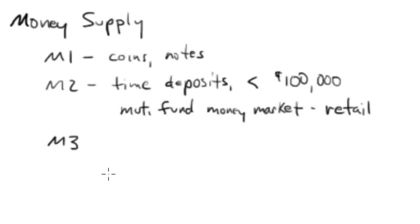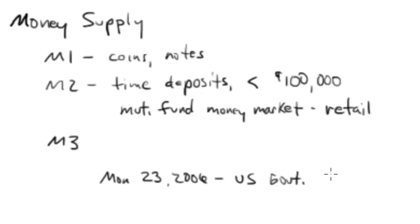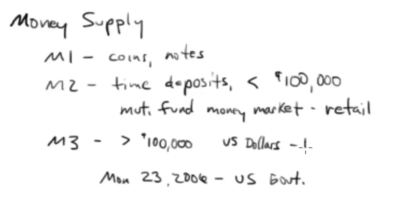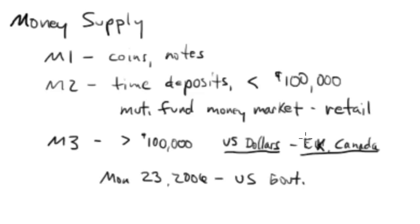M3 — and shock of shocks — on Monday the 23rd of 2006, the U.S. government ceased reporting this number. Stopped reporting it, no longer publishing it. M3 covers all time deposits greater than $100,000 and also covers all U.S. dollars held in banks in the UK and Canada. These are called eurodollars — not to be confused with the euro — a U.S. dollar held in the UK or Canada is called a eurodollar.